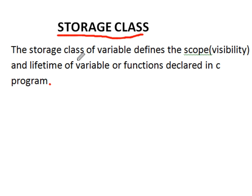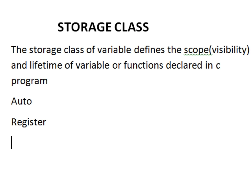Suppose we have declared any variable within a C program, then it depends upon its type whether that variable is visible in that block and how much time it will be visible in that block or program. In C we have 4 storage classes: 1st is auto, 2nd is register, 3rd is external, and 4th is static.